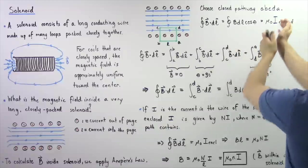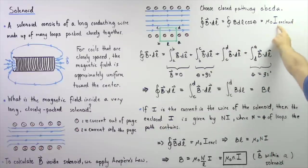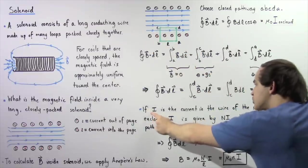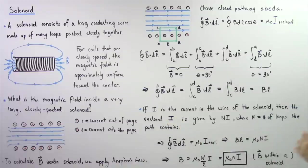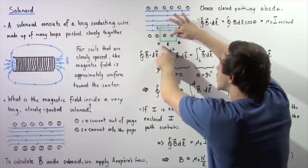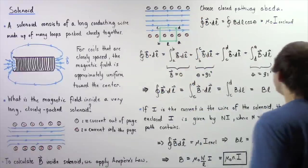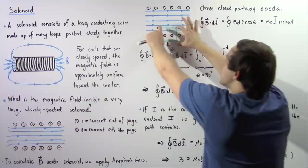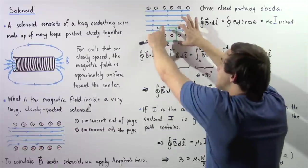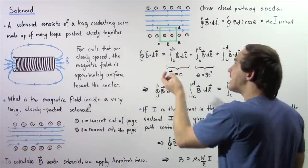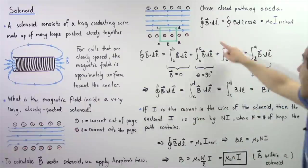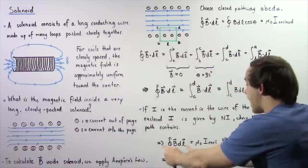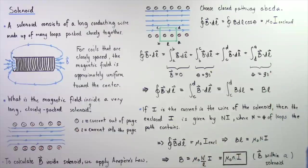Now let's calculate the enclosed electric current on the right side of the equation. If the electric current in the solenoid wire is I, then the enclosed electric current is N multiplied by I, where N is the number of loops within the chosen closed region. So the enclosed current I-enclosed equals N times I, the number of loops inside the path multiplied by the current. From Ampere's law, B·L equals mu-naught times N times I.